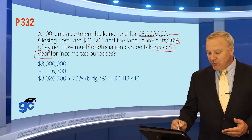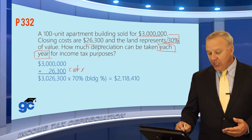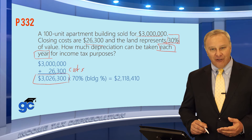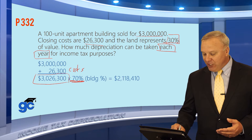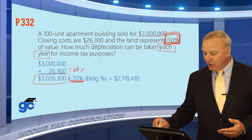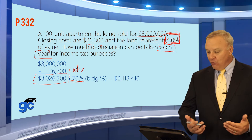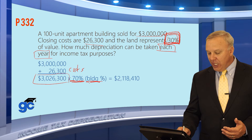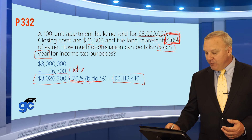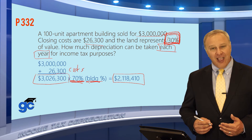The purchase price was three million dollars and the closing costs were twenty-six thousand three hundred dollars, so the total acquisition cost was three million twenty-six thousand three hundred dollars. We multiply by seventy percent because the land represented thirty percent of the value — you cannot depreciate the land, which means you can depreciate everything else, representing seventy percent, the building percentage. Three million twenty-six thousand three hundred times seventy percent gives a depreciable basis of two million one hundred eighteen thousand four hundred and ten dollars.